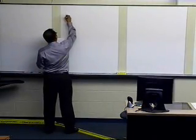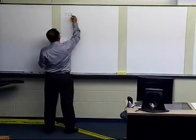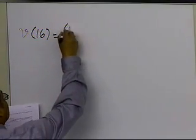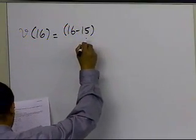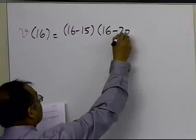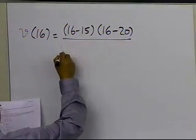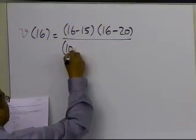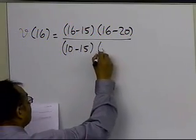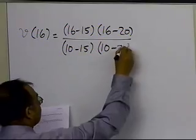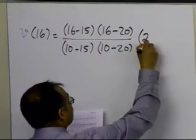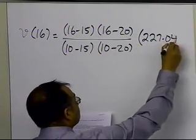So in order to calculate v of 16, it will be equal to (16 minus 15)(t minus t1) divided by (t minus t2), divided by (t0, which is 10, minus t1) times (t0 minus t2), that's (10 minus 20), multiplied by the velocity at t0, which is 227.04.